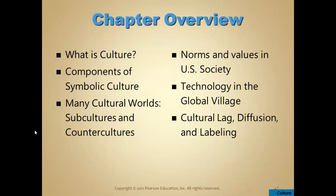This chapter looks at the definition of culture, the components of symbolic culture, and also takes a look at smaller cultures within a culture. One is called a subculture, and we'll talk about what that is and the difference between that and countercultures. We'll also look at technology and its impact on culture in what the author calls the global village, and explanations of how culture spreads through cultural lag, diffusion, and labeling.